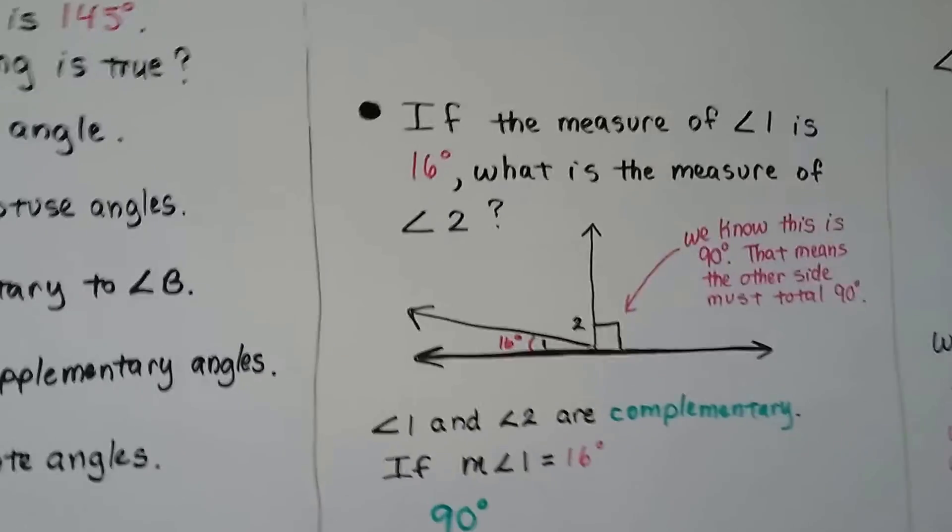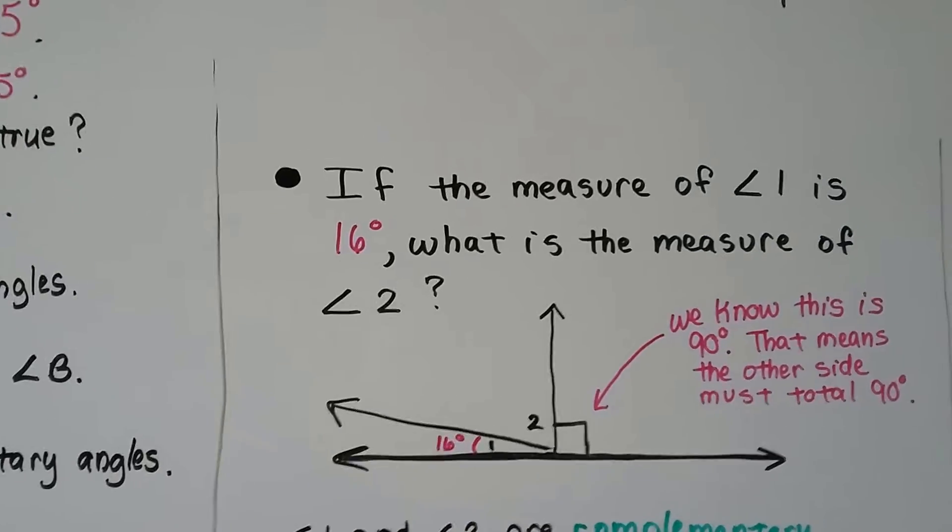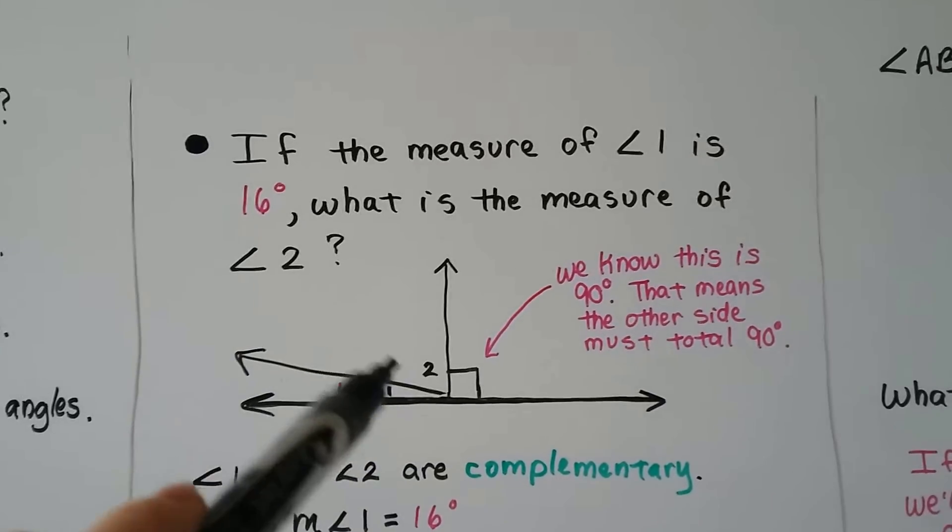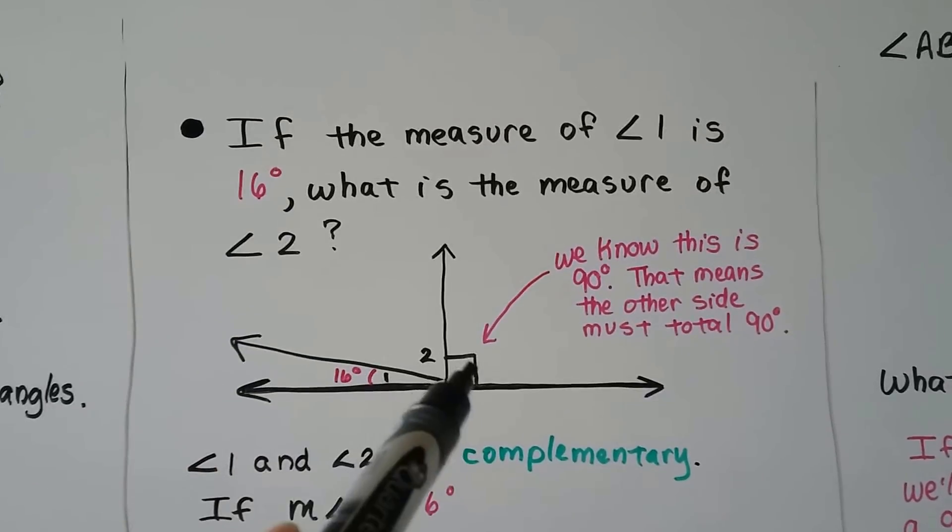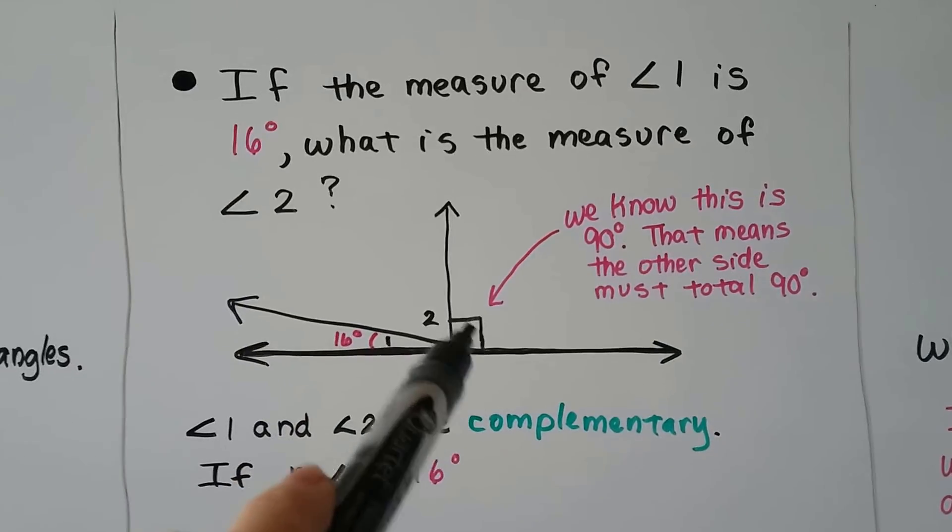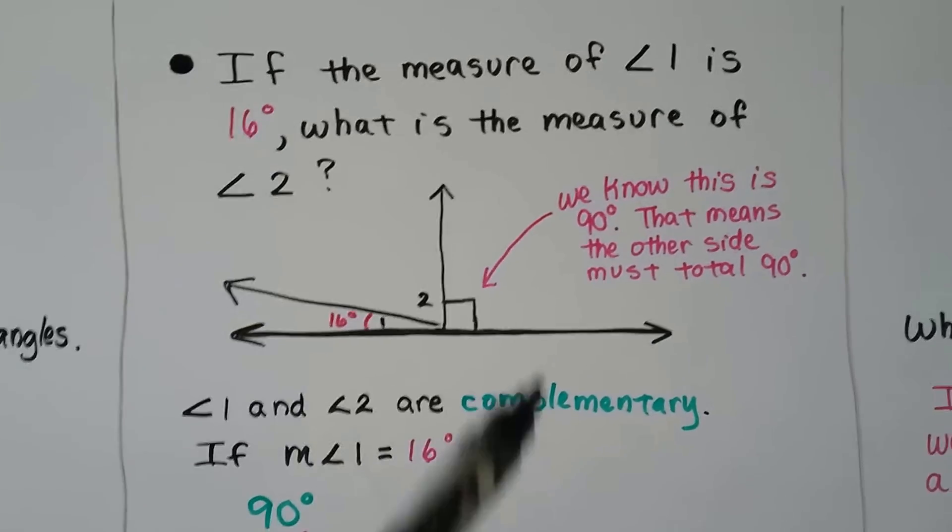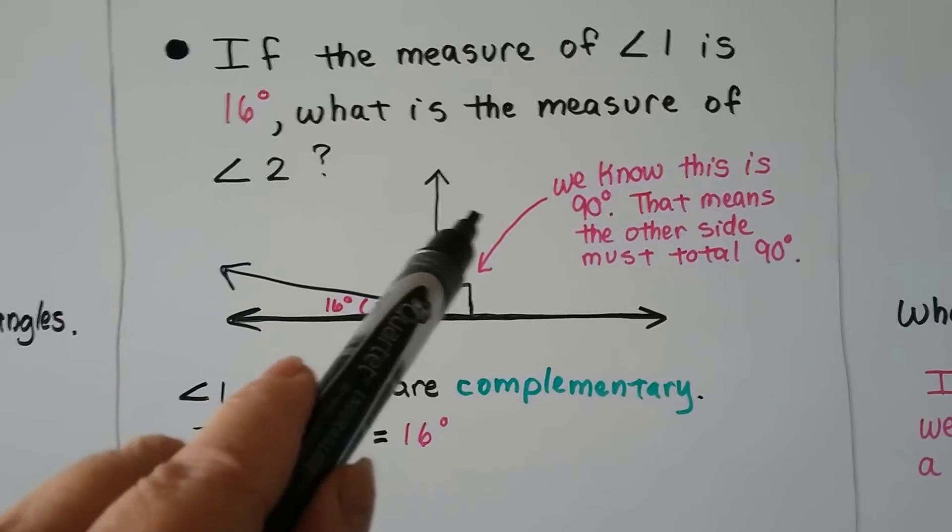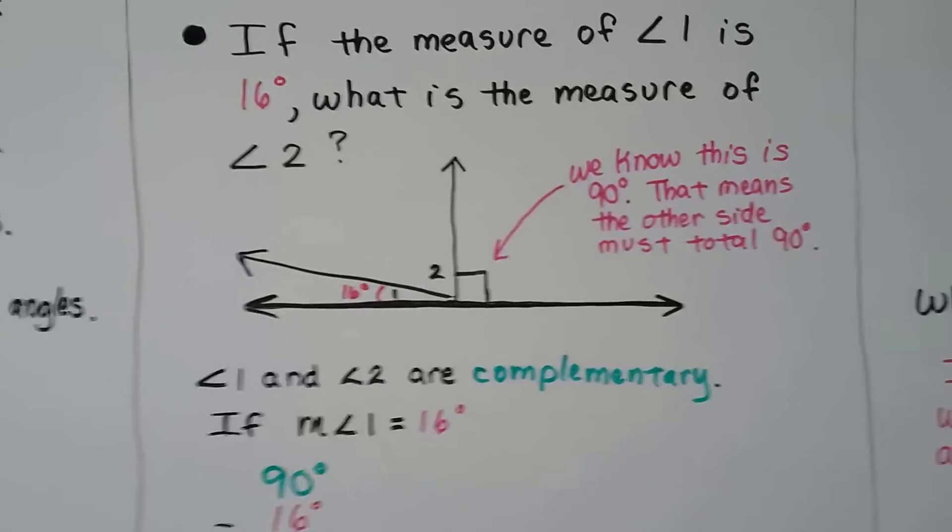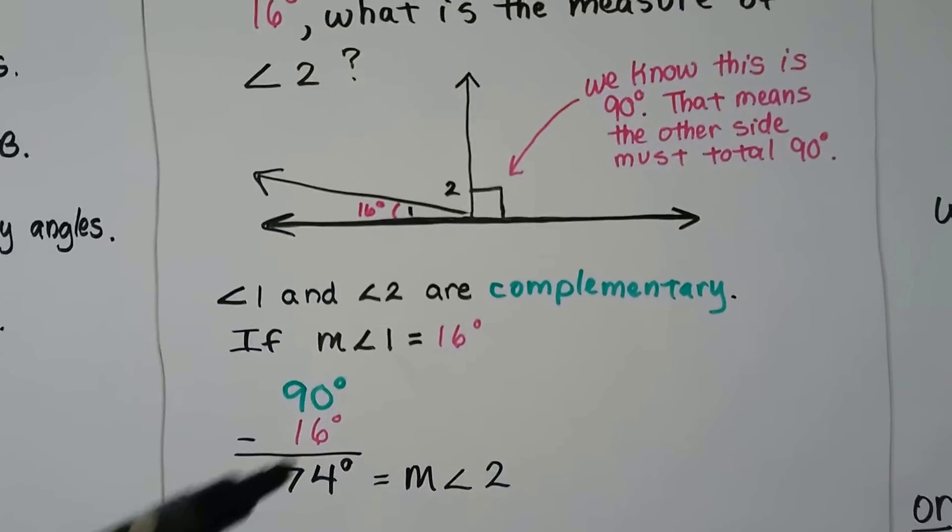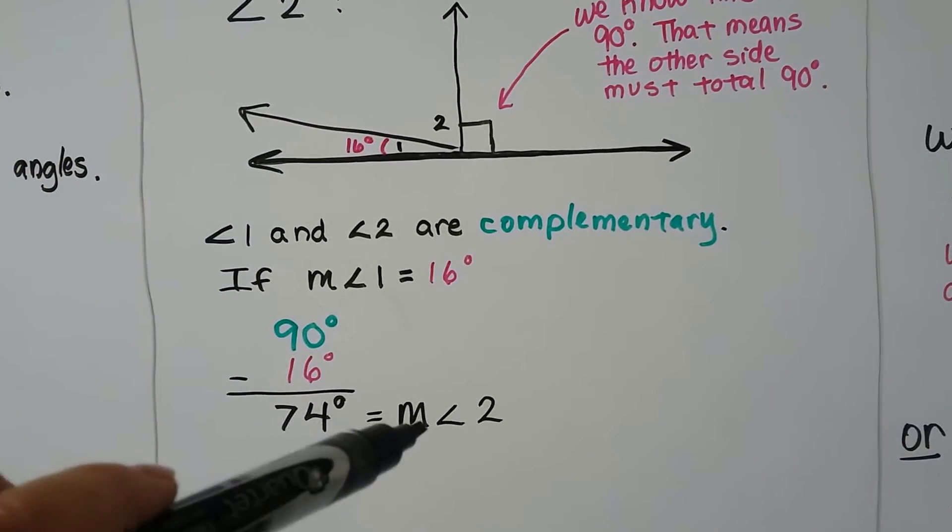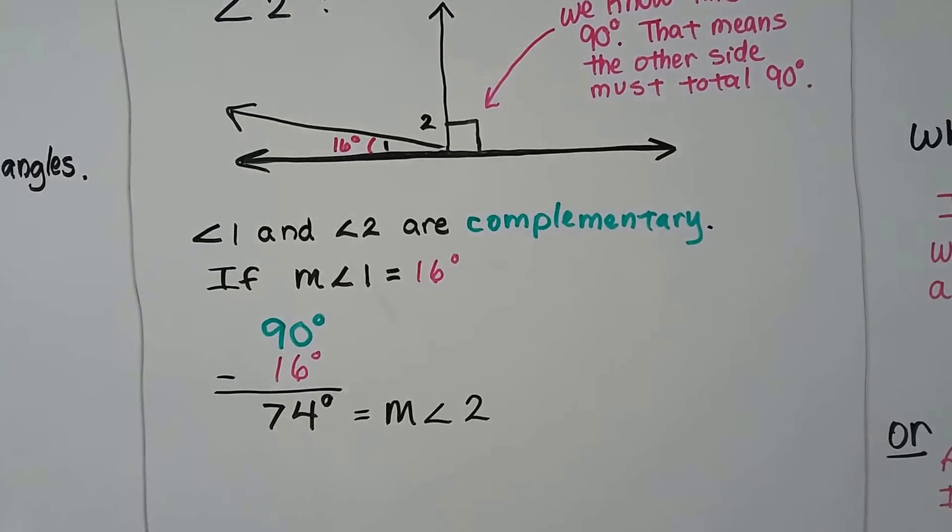This one says, if the measure of angle 1 is 16 degrees, what is the measure of angle 2? Well, look, we have a box. We have a straight line here, and we've got that right angle 90 degree box here. So we know that this angle is 90 degrees. That means the other side here, angles 1 plus 2, have to total 90 degrees. All we have to do is take the 16 from the 90 to find out that angle 2 is 74 degrees.